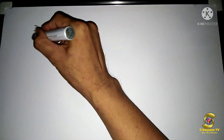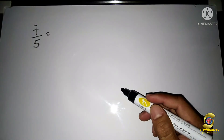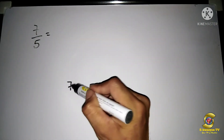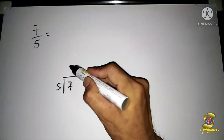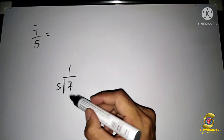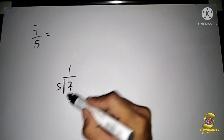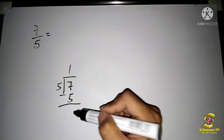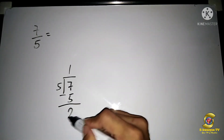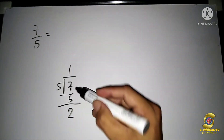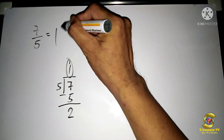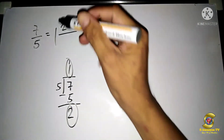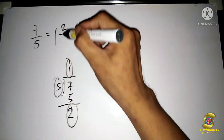Next is 7 over 5. Divide 7 by 5: the answer is 1, one times 5 is 5, then 7 minus 5 is 2. Our answer is 1 and two-fifths.